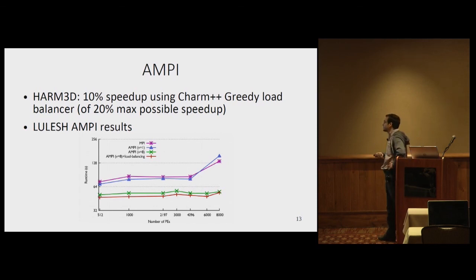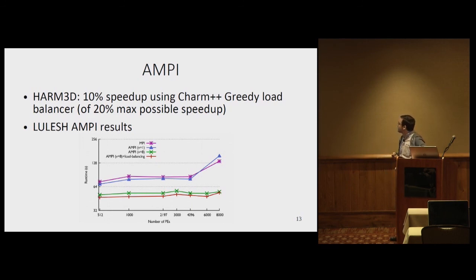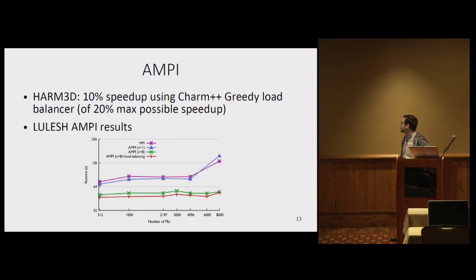One of our collaborators in the PATH project was the Harm3D application. We tested it in a scenario where there wasn't a lot of imbalance. They reported that the max possible speedup in this scenario would be 20%, and just running it on AMPI, we got a 10% speedup. We didn't have time to explore further because the project ended on their side.